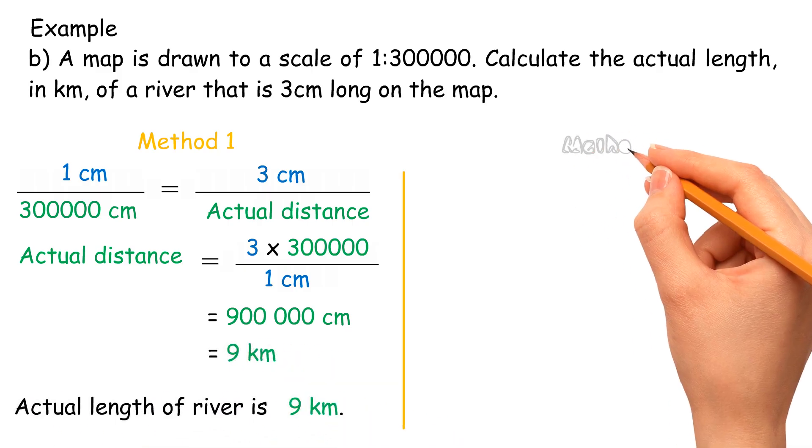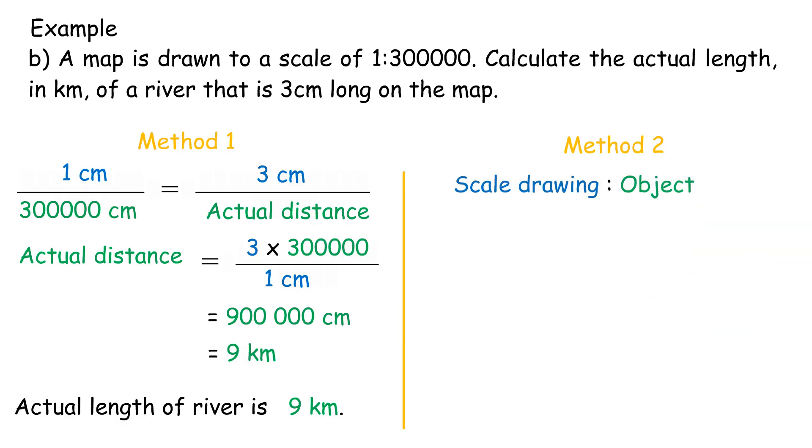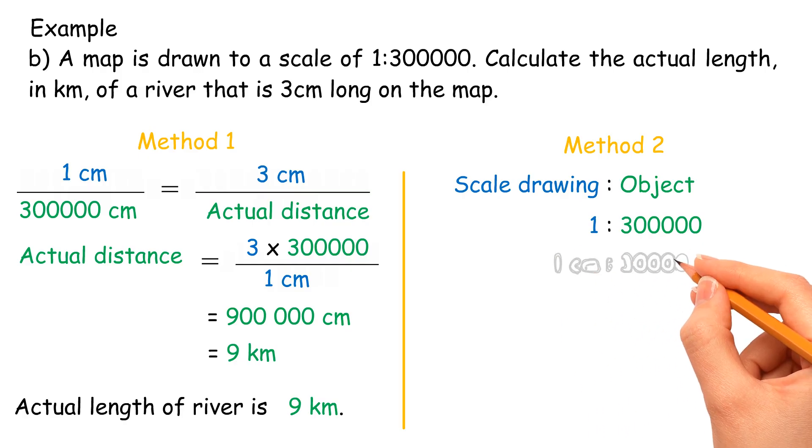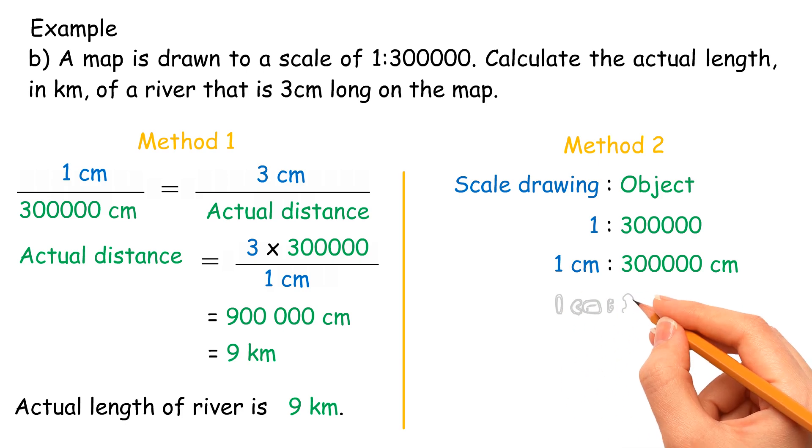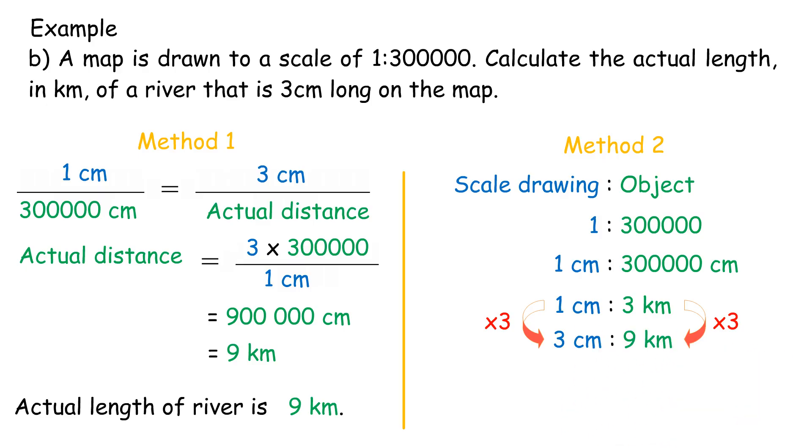Method 2, scale drawing is to object: 1 is to 300,000, 1 cm is to 300,000 cm, 1 cm is to 3 km. Due to the question, the river is 3 cm long on the map, so 1 cm needs to times 3 to become 3 cm. If times 3 on the left side, need to times 3 on the right side also. 3 cm is to 9 km. Therefore, the actual length of the river is 9 km.